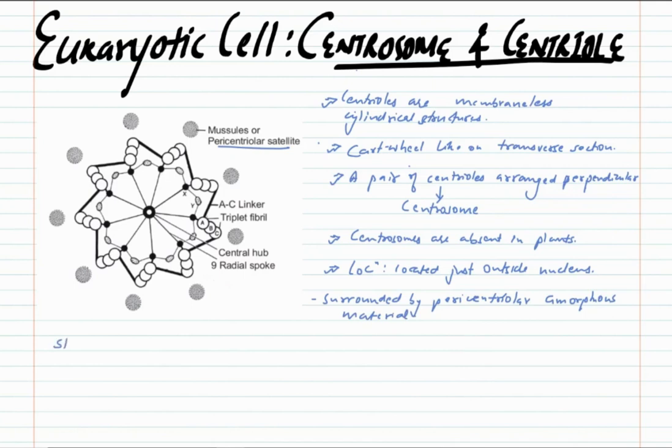Talking about the structure of a centriole: each centriole is made up of nine evenly spaced peripheral triplet fibrils made of tubulin protein. On the periphery, we have nine evenly spaced peripheral triplets.